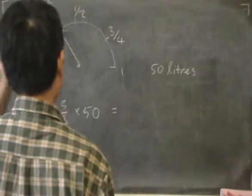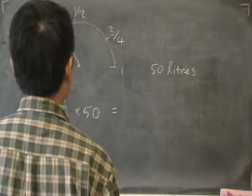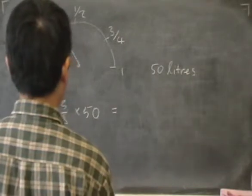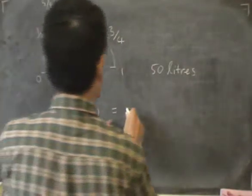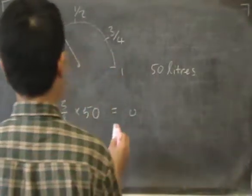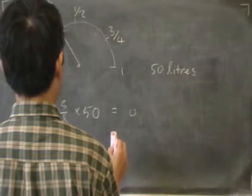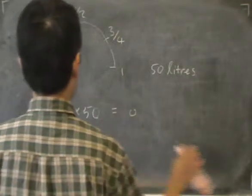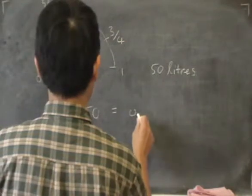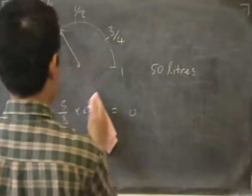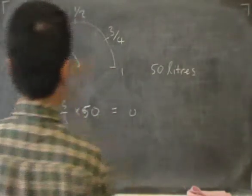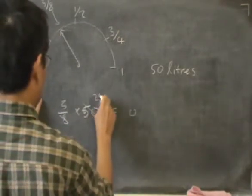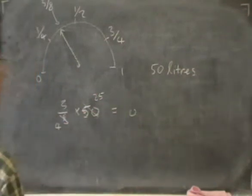We can use a calculator to do that. Let me try fractions. If I cancel, divide by 2, that's 25, that's 4. And I get 3 quarters of 25.